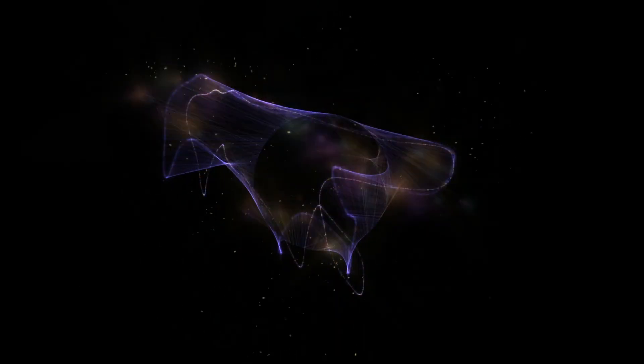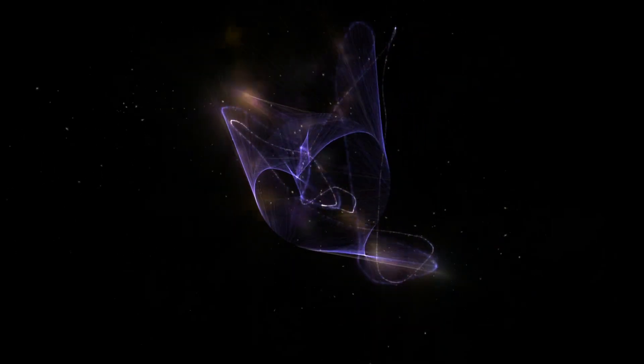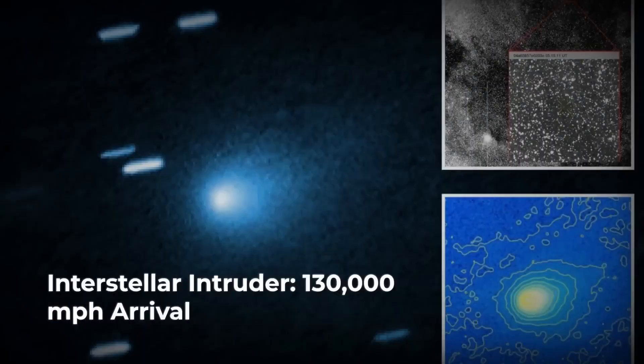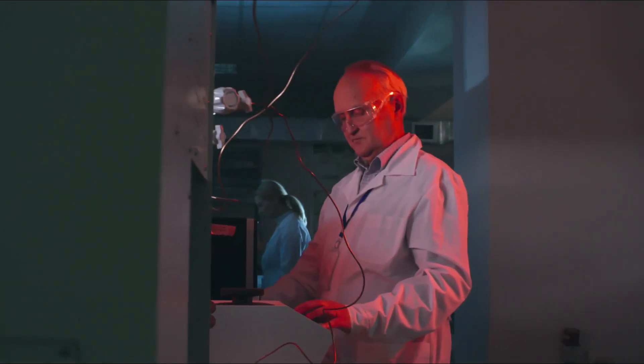A shadow the size of a city is falling across our solar system—an object tearing through the void at a staggering 130,000 miles per hour. This is 3I Atlas, the third confirmed interstellar visitor to ever grace our cosmic neighborhood. But this is no mere cosmic rock.